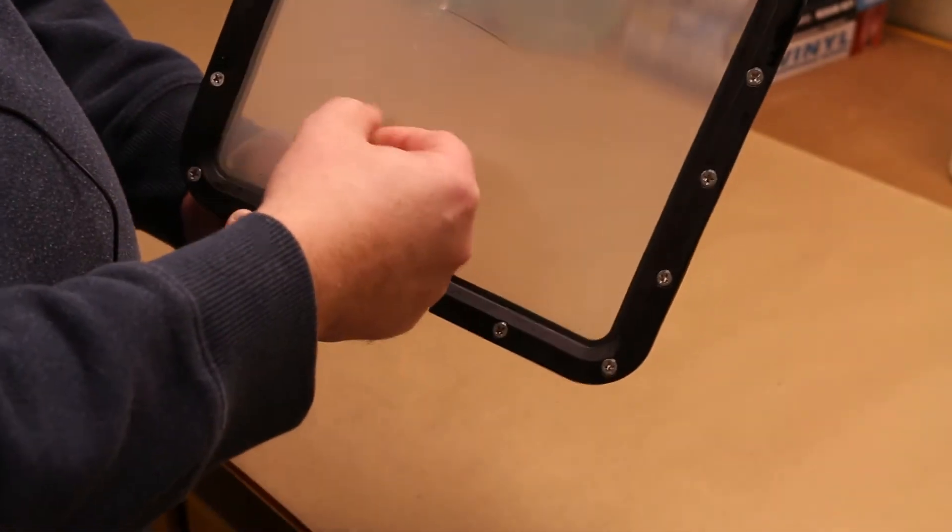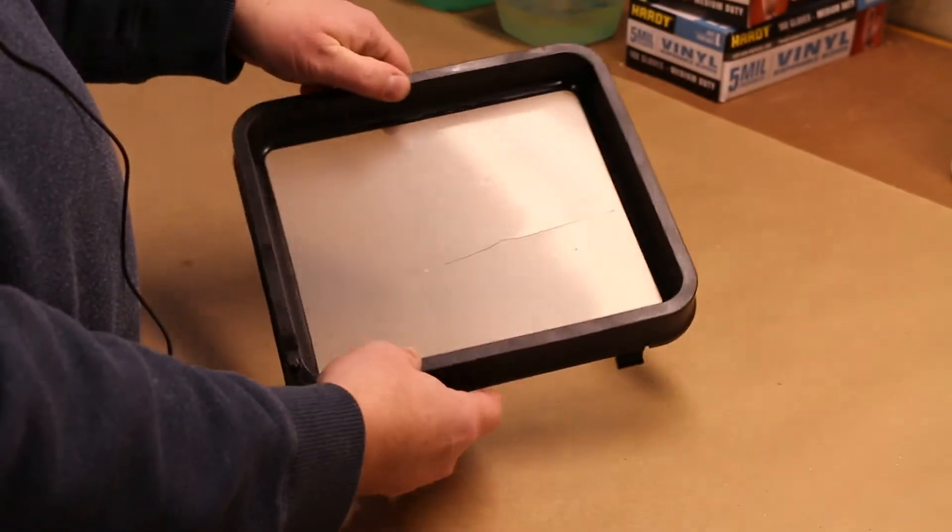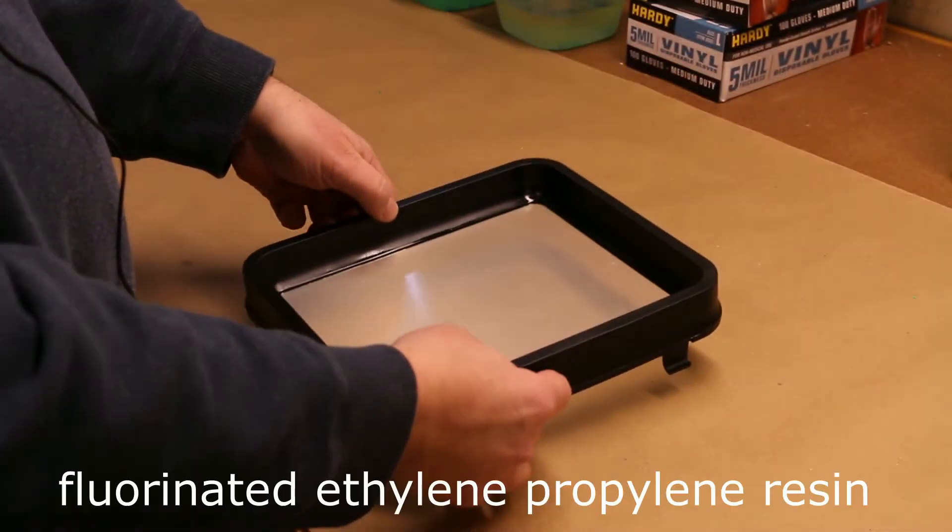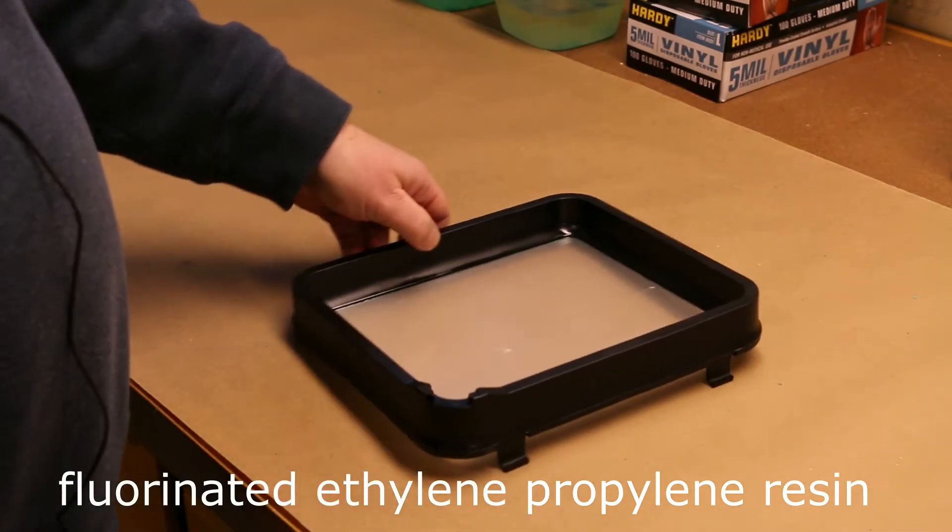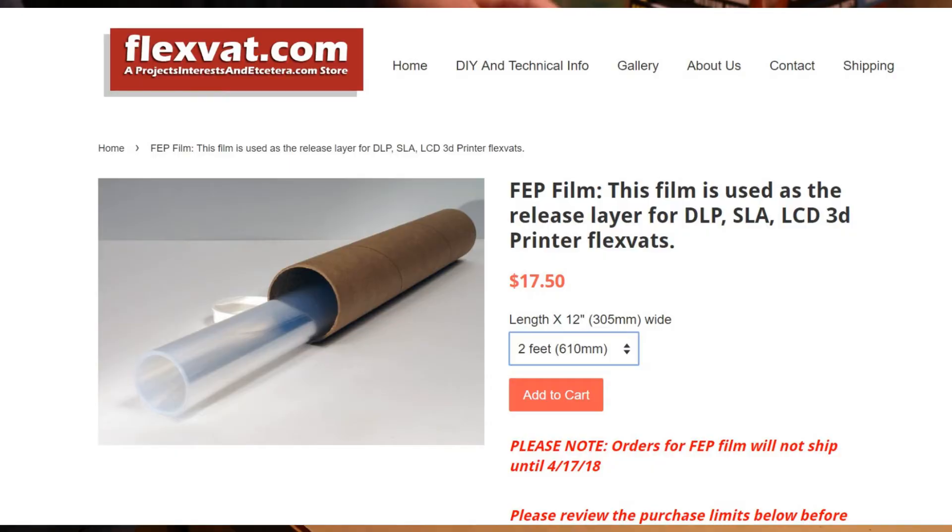The film I'm using is called FEP film. FEP stands for fluorinated ethylene propylene resin. I ordered my replacement from FlexVat.com here in the US.